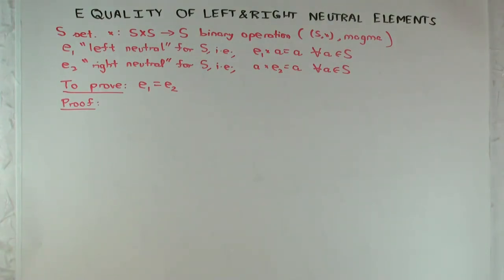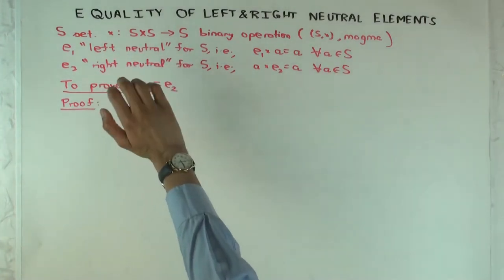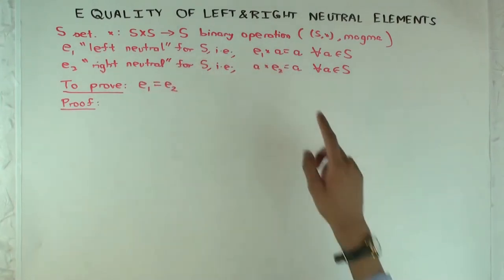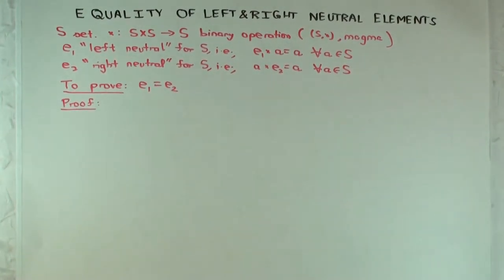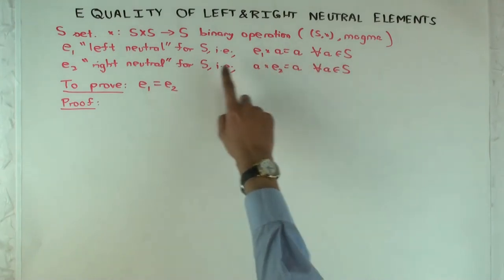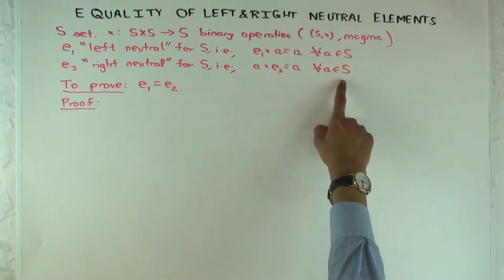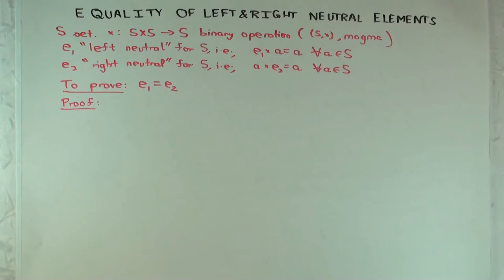Suppose now there is a left neutral element and a right neutral element. So there's like a left identity and a right identity. So a left neutral element has a property that its product with anything is that thing. So E1 star A is A for all A. And E2 is right neutral, so that means A star E2 is A for all A. And now the goal is to prove that E1 has to equal E2.